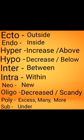Next prefix, oligo — oligo means decrease or scanty. For example, oliguria means decreased urine output. Oligospermia — oligo means decrease, sperm means sperm — so oligospermia means low sperm count.